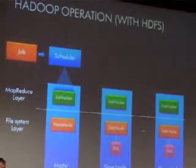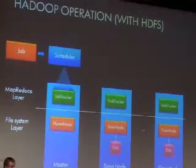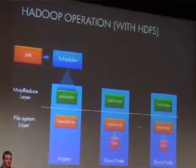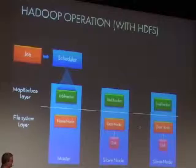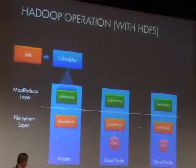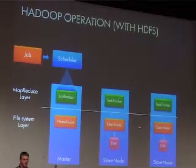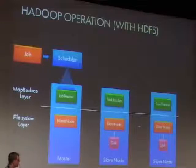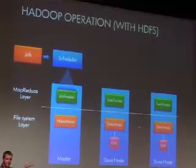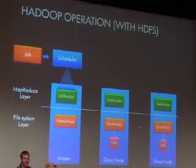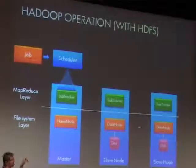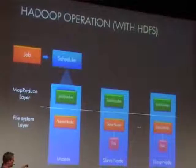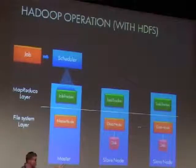Let's jump one level deeper and look at how this translates to the server components, because then we can pinpoint what's happening and why we need to persist certain components. There are basically two layers: the MapReduce layer, shown in green, and the file system layer — here I'm showing HDFS, the Hadoop Distributed File System, and its main components indicated in orange.